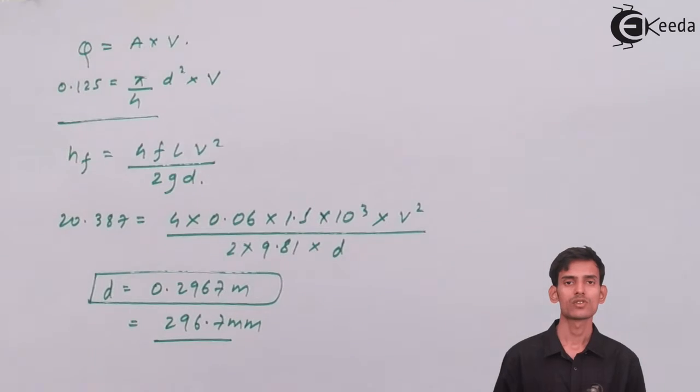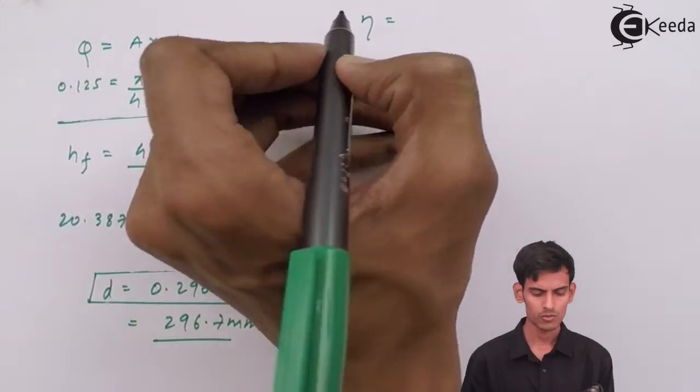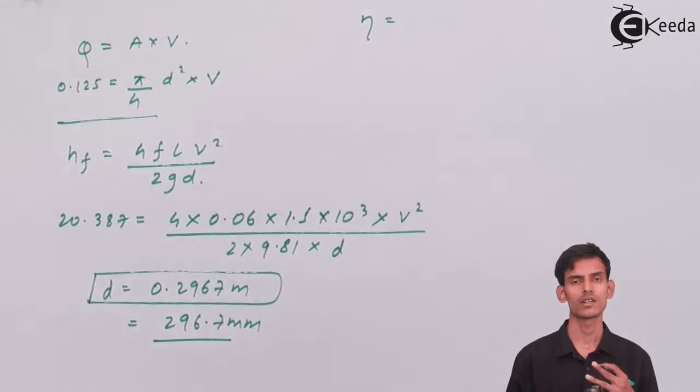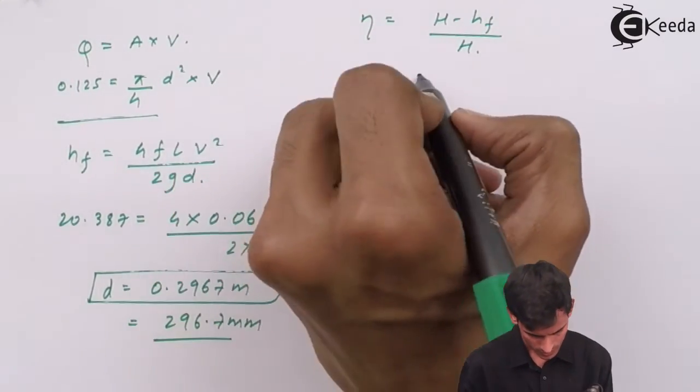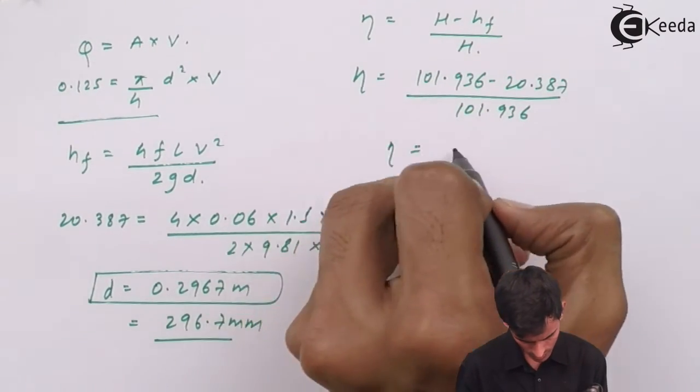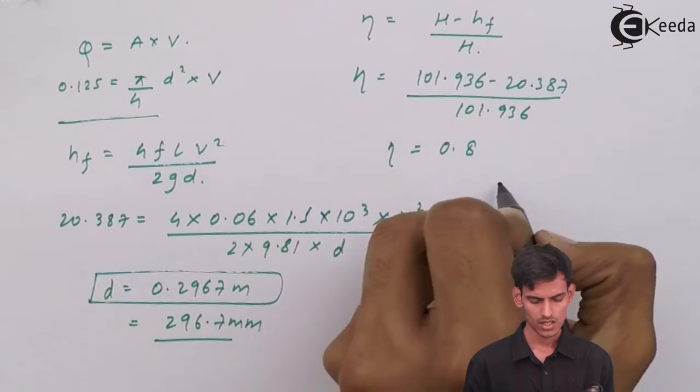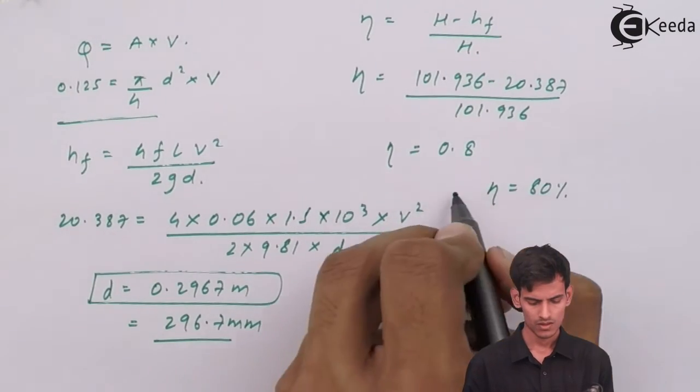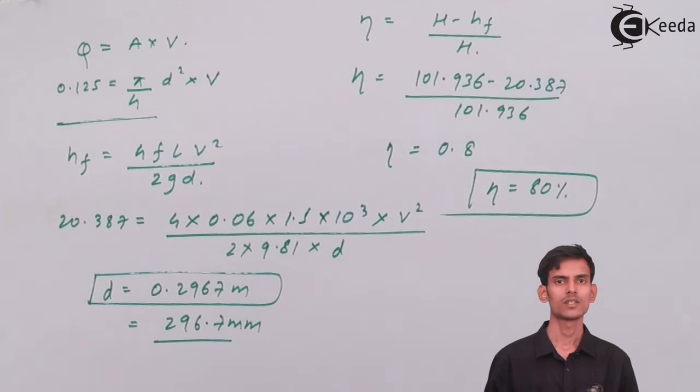Next part of the question is to calculate the efficiency. Efficiency is nothing but the output upon the input. The output that we get is nothing but the head available at the output, so that is h minus hf, and input is nothing but the input head. The efficiency value comes out to 0.8. In terms of percentage, multiply the value of the fraction by 100 to get 80%. So we have calculated both things, the diameter and the efficiency.